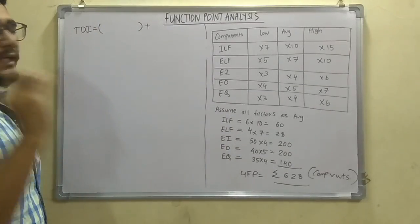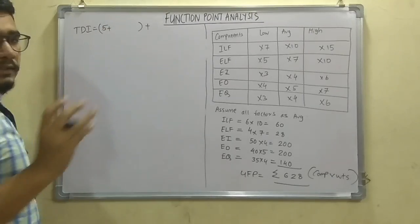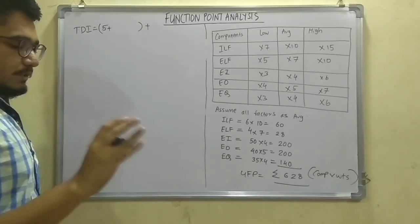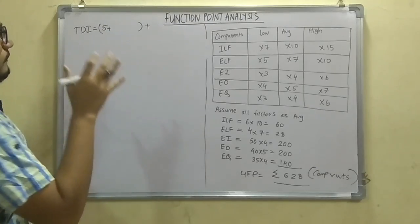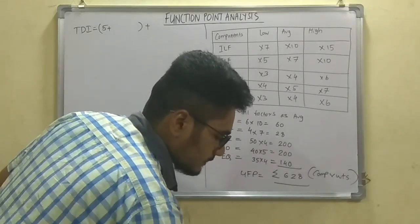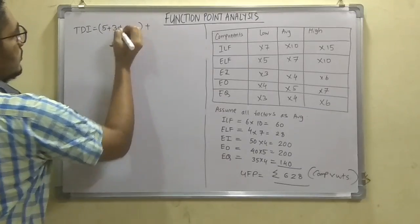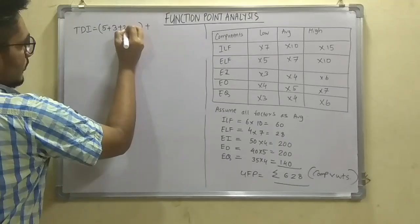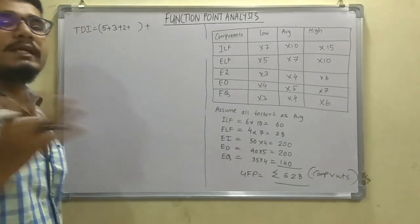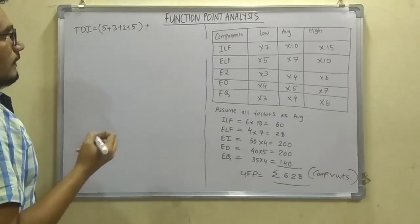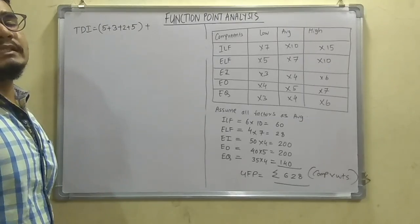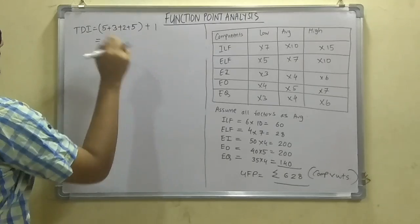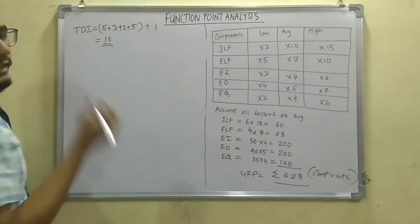So first we are saying that it's critical performance. From the table, we get the critical performance is 5. For critical it is, you just have to consider the value of critical, just 5. Next is the average end user efficiency, for that it is 3. For average it is 3. Next is moderate distributed data processing, for moderate it is 2. And finally, again it is critical data communication, for that it is 5. And they have mentioned that assume all other GACs to be incidental. So for incidental, we have the value of 1. So this comes out to be 5 plus 5 is 10, 10 plus 2 is 12, plus 3 is 15, plus 1 is 16. So TDI comes out to be 16.